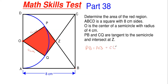We can say the same thing for CQ and DC. Since this is a square, CQ is also equal to CD, which is equal to eight centimeters in length. We can apply the tangent line theorem to the smaller lines PZ and QZ as well, because we have tangency here, tangency here, and they intersect at point Z. That means PZ is equal to QZ.